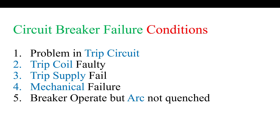The third failure condition is trip supply failure — if the tripping supply fails, meaning no supply is available, then our trip coil and circuit breaker will not operate. This is also a circuit breaker failure and the CBF relay will operate. The fourth failure condition is mechanical failure — if everything electrical, including the trip coil, DC supply, and trip circuit, is healthy but due to a mechanical or mechanism failure the circuit breaker does not operate, the CBF relay will also operate.